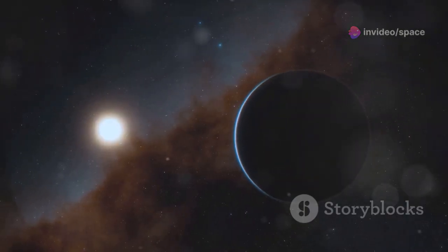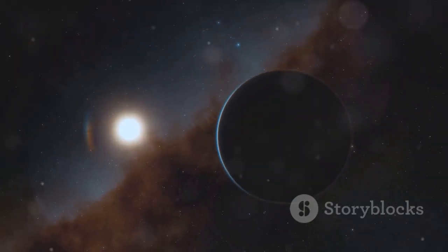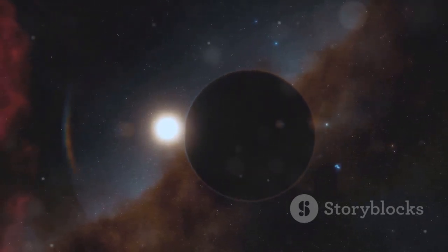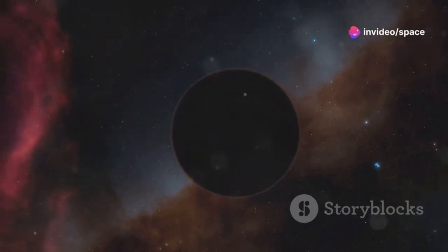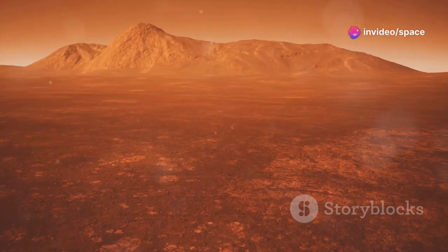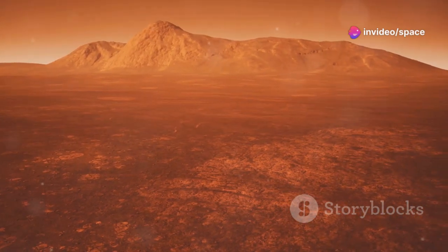This tidal locking would have a profound impact on Proxima b's climate. The constant exposure to the star's radiation on one side would lead to extreme temperatures, while the lack of sunlight on the other side would result in frigid conditions. The sun-facing side would experience scorching temperatures, potentially hot enough to melt rock, while the dark side would be locked in a perpetual freeze, with temperatures plummeting to hundreds of degrees below freezing. Such extreme conditions might seem incompatible with life as we know it.